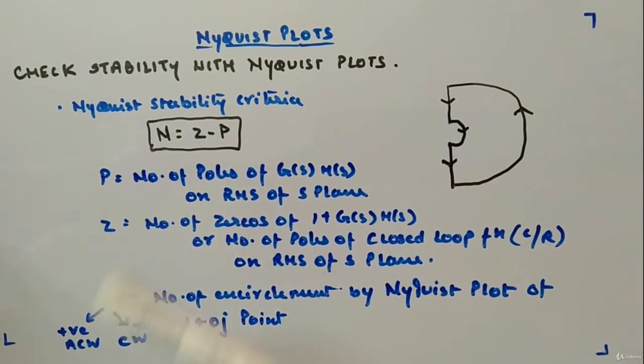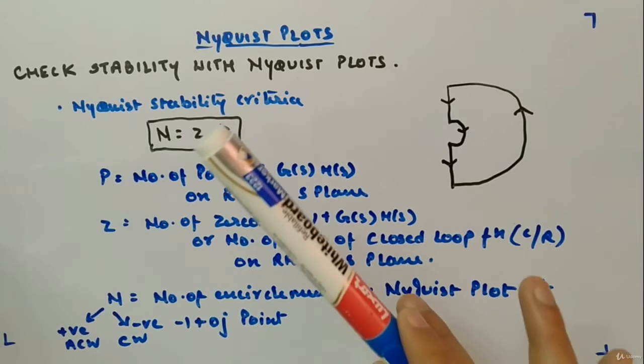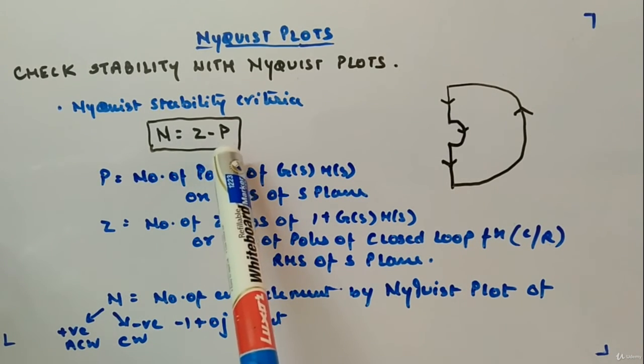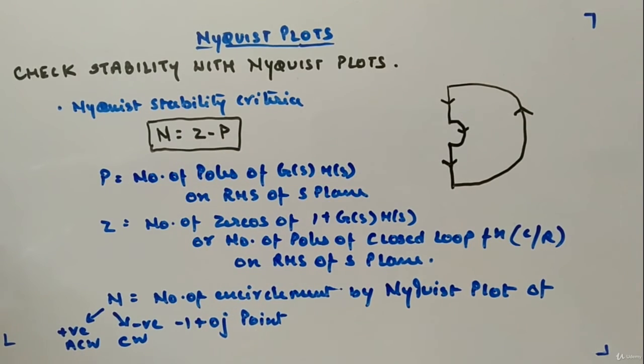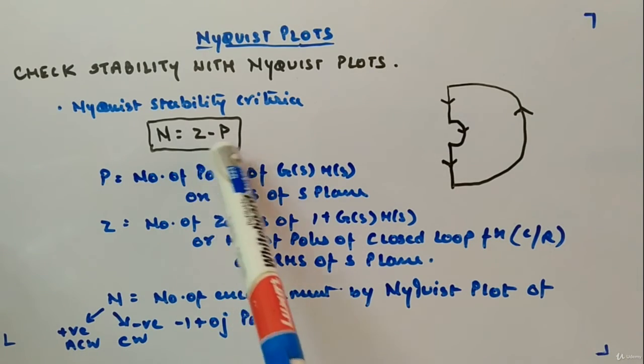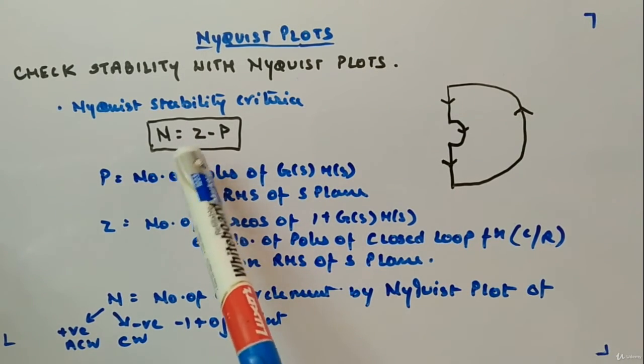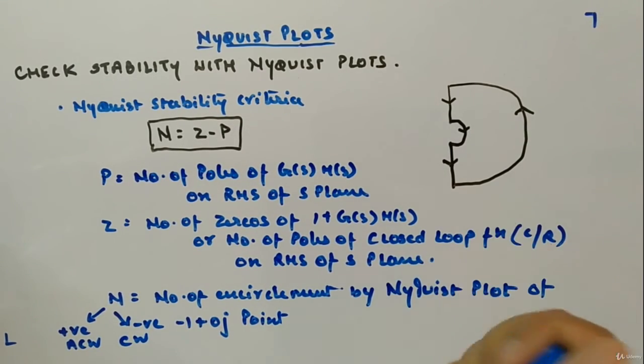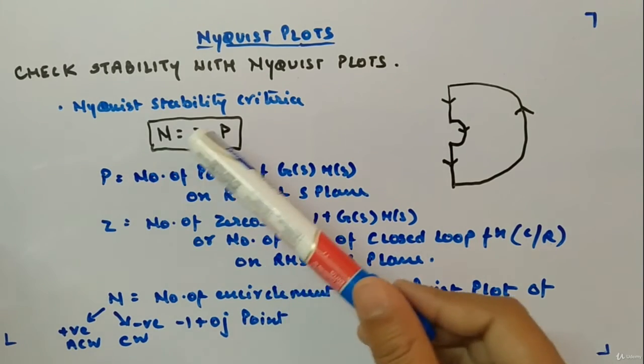If the contour is given in anticlockwise fashion, then the only difference is the relation will be N = Z - P instead of P - Z. For clockwise side we had P - Z, but for anticlockwise we will have Z - P. This is the only difference when the contour changes, which rarely happens. Mostly you will be using the clockwise one and P - Z only.